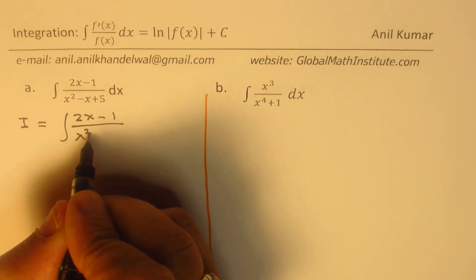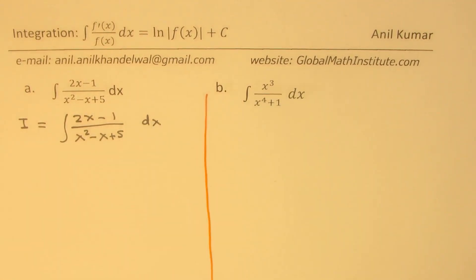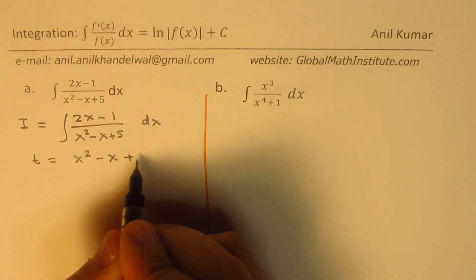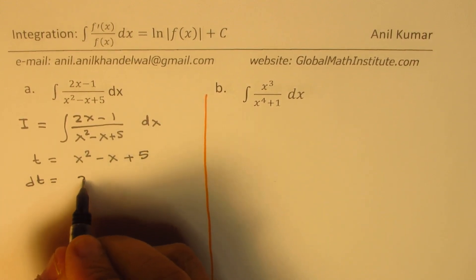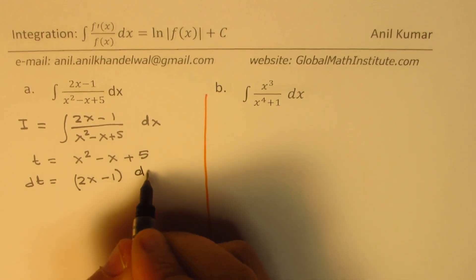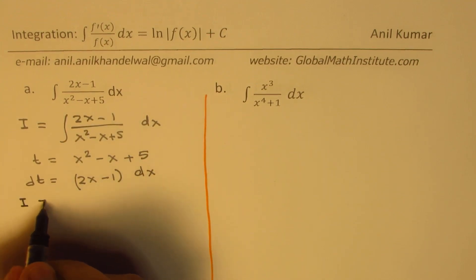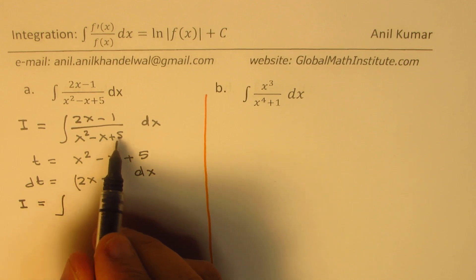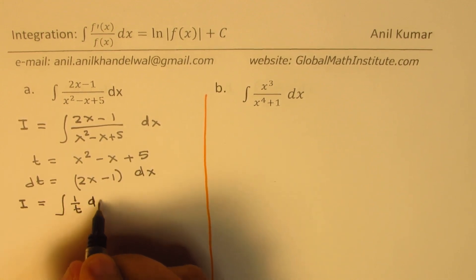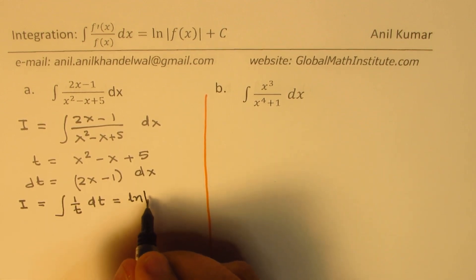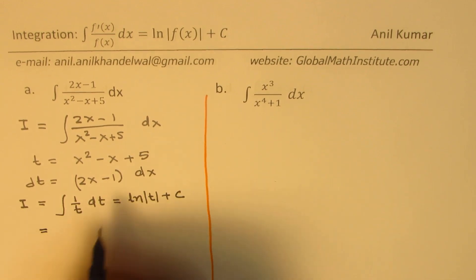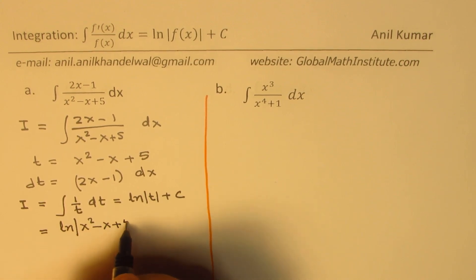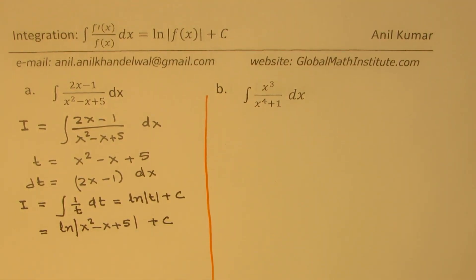Let's solve example (a): find the integral of (2x - 1)/(x² - x + 5) dx. We let i be the integral and substitute t = x² - x + 5. Differentiating, we get dt = (2x - 1) dx. So the numerator is dt and the denominator becomes 1/t, giving us ∫(1/t) dt = ln|t| + c. Substituting back, the answer is ln|x² - x + 5| + c.